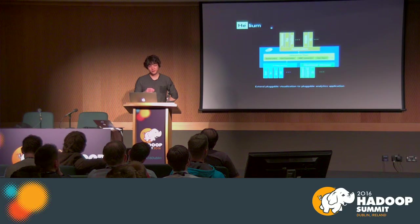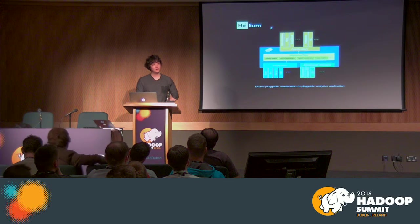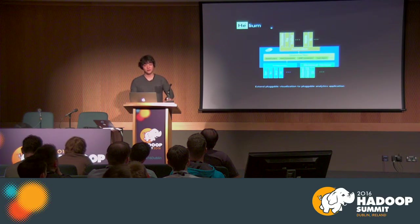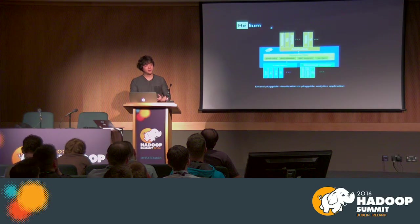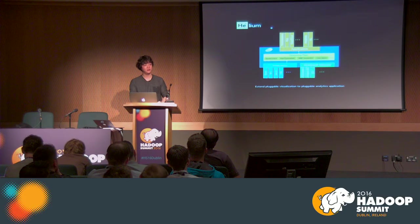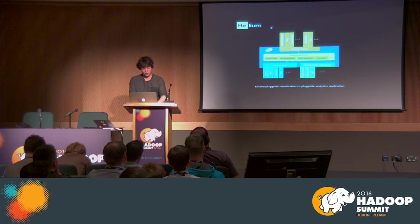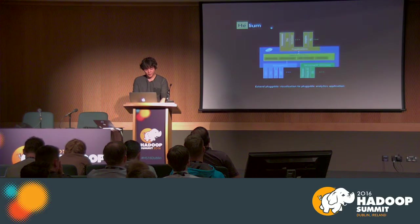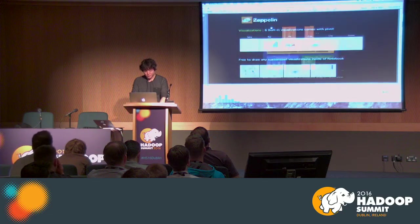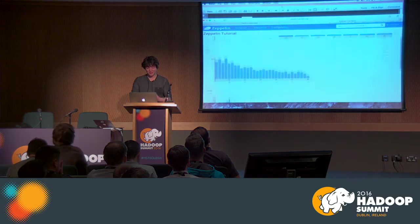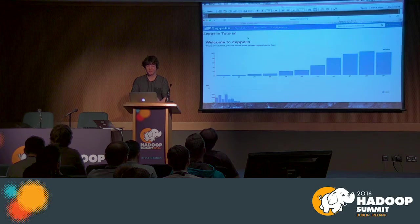Not only can we make visualization pluggable, but we can also make an actual application layer on top of Zeppelin. That application layer can leverage resources provided by interpreters — for example, a Spark context or a JDBC connection can be resources that the application uses. Unfortunately this demo instance doesn't have the Helium framework, so I'll demonstrate an alternative approach.